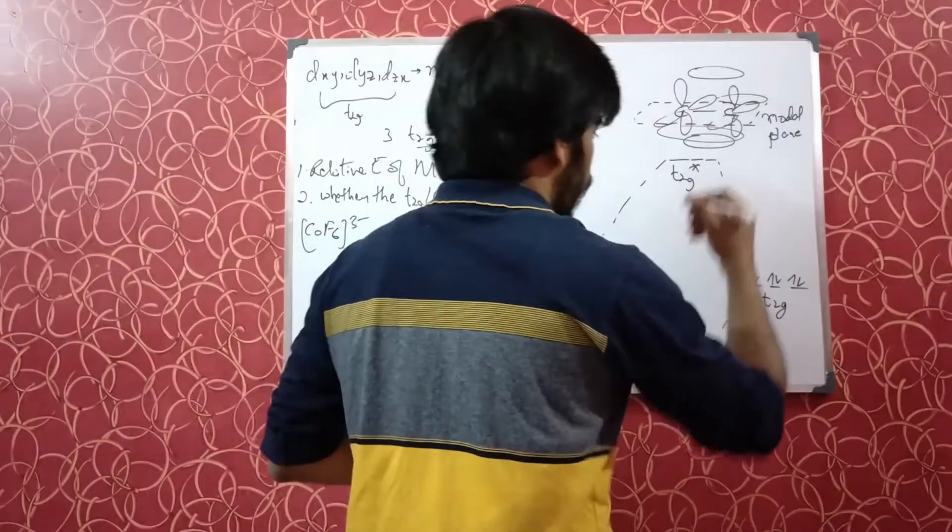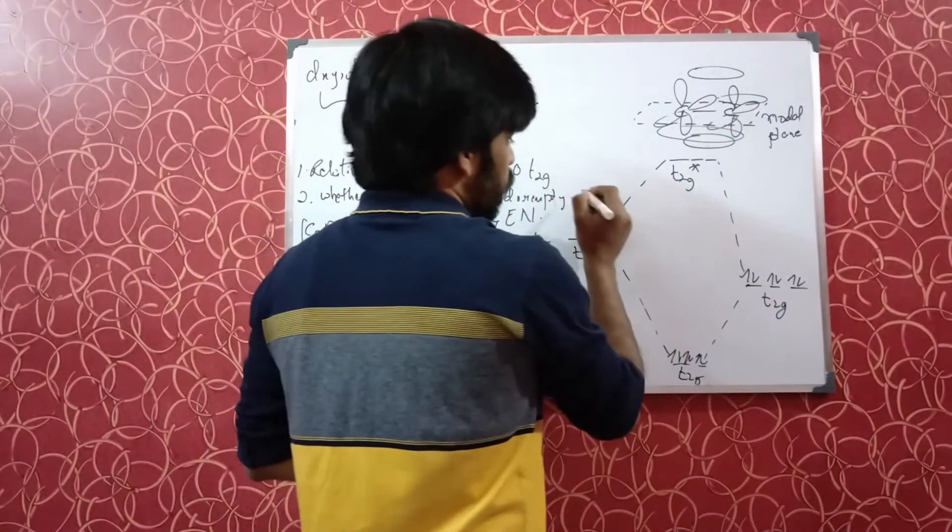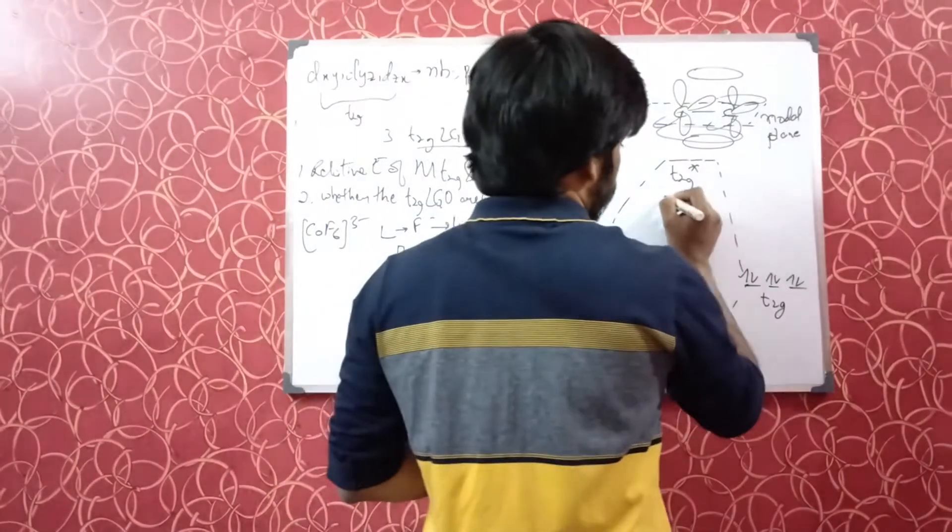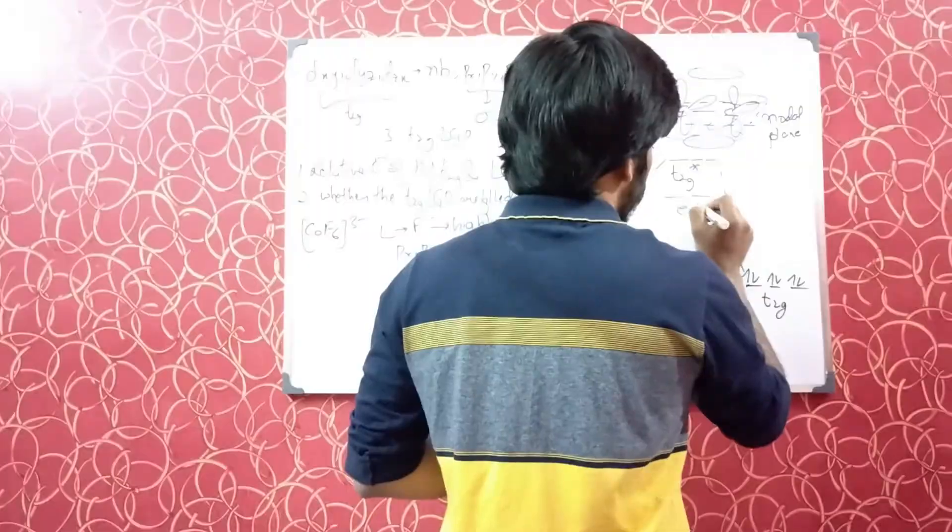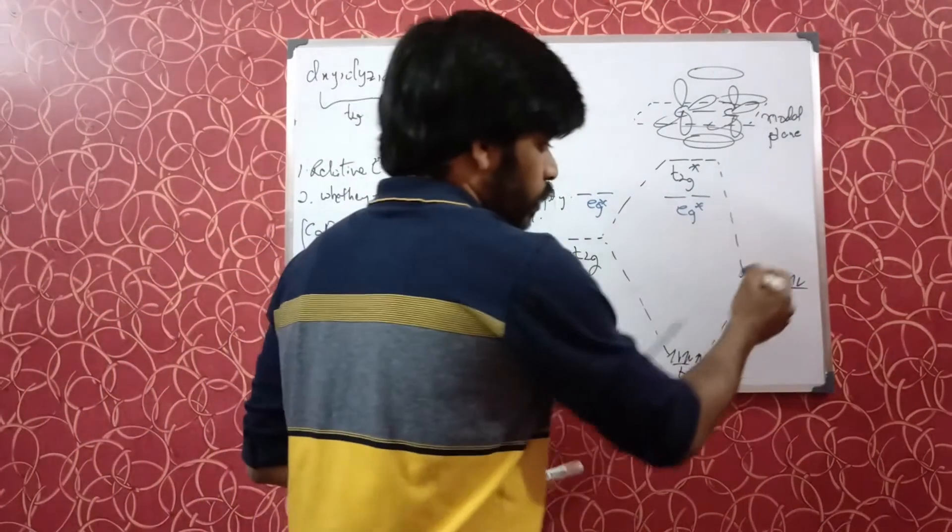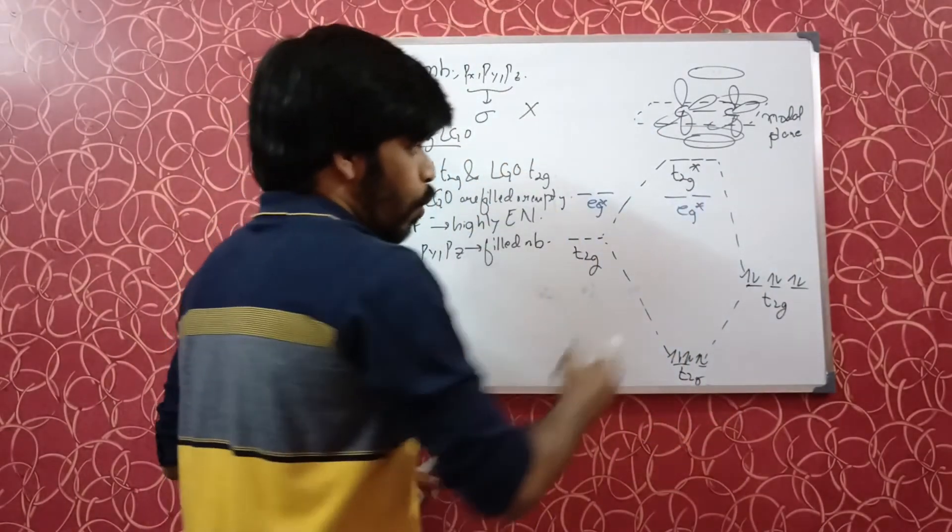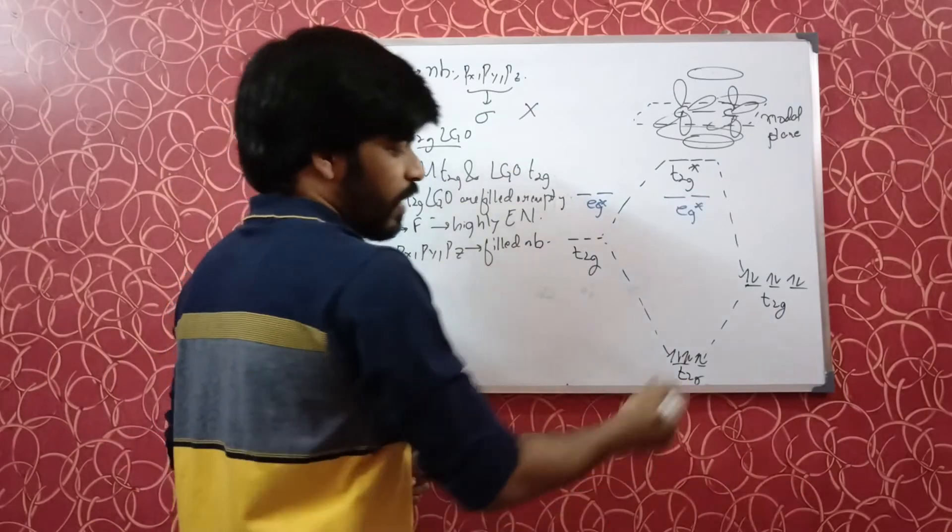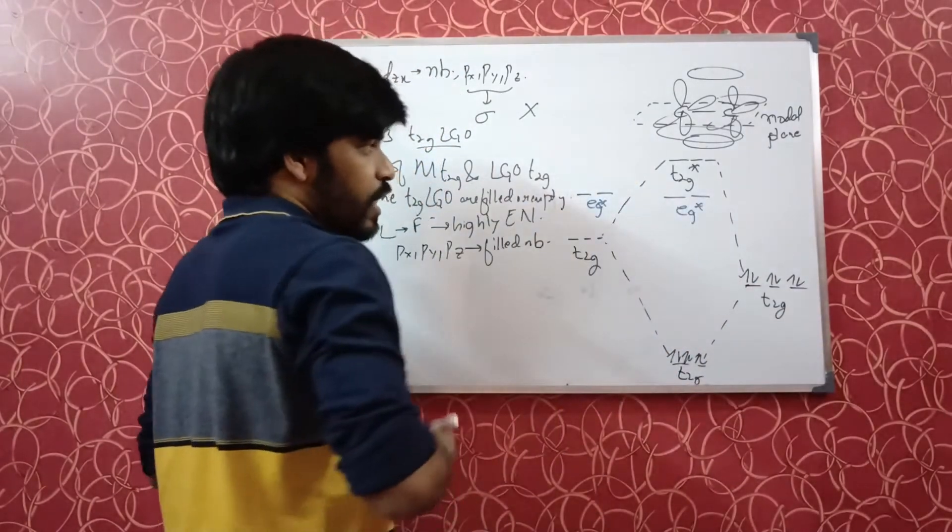If you could recollect from the sigma bonding, the eg star lies here and there is no change in its level. This bonding t2g orbitals have more character of the ligand while the anti-bonding have more character of the metal, because it is closer to the energy of the metal and this is closer to the energy of the ligand.